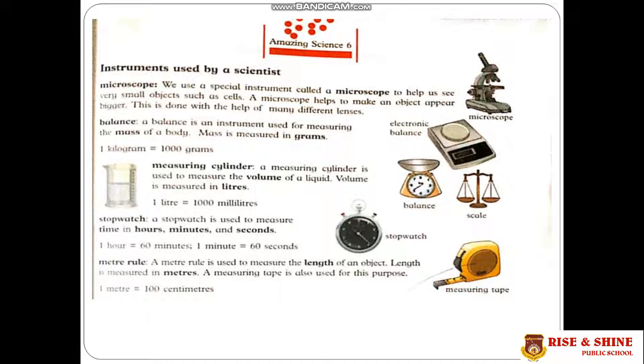Let us know about some important instruments of the laboratory used by a scientist. Microscope - it is used for magnifying small objects. It helps to make an object appear bigger with the help of many different lenses.